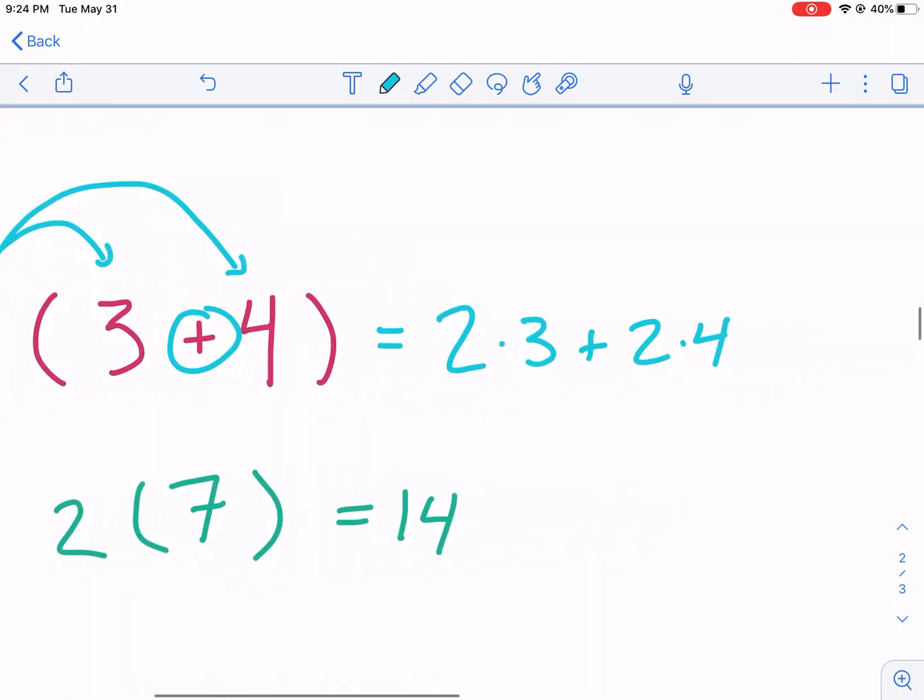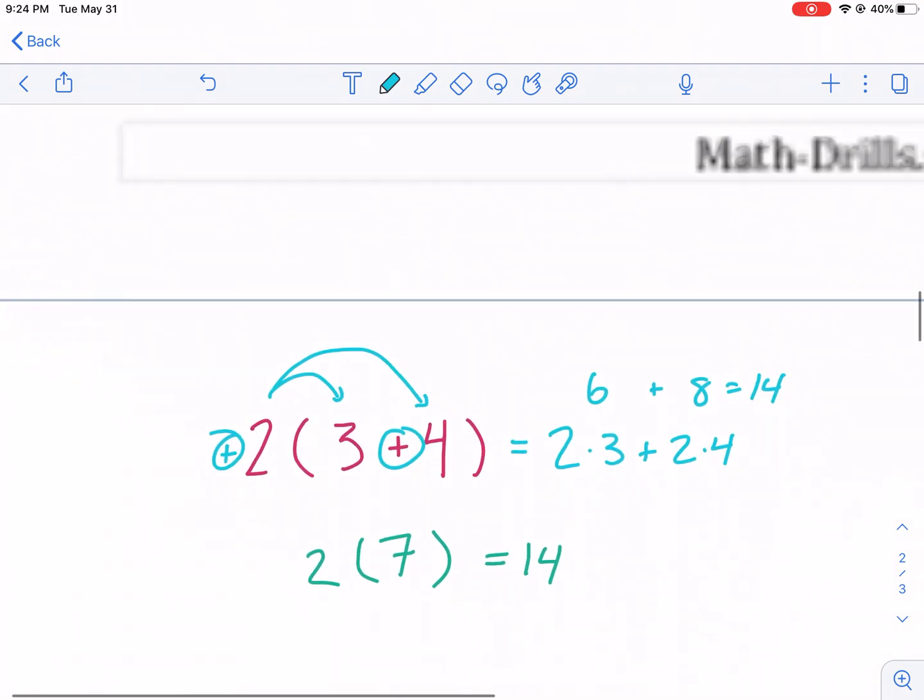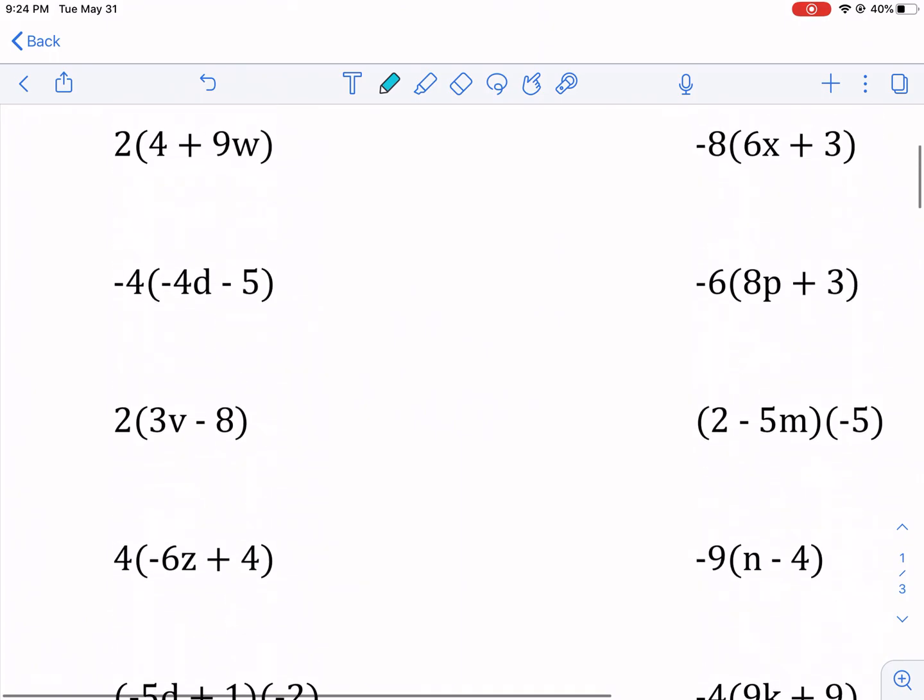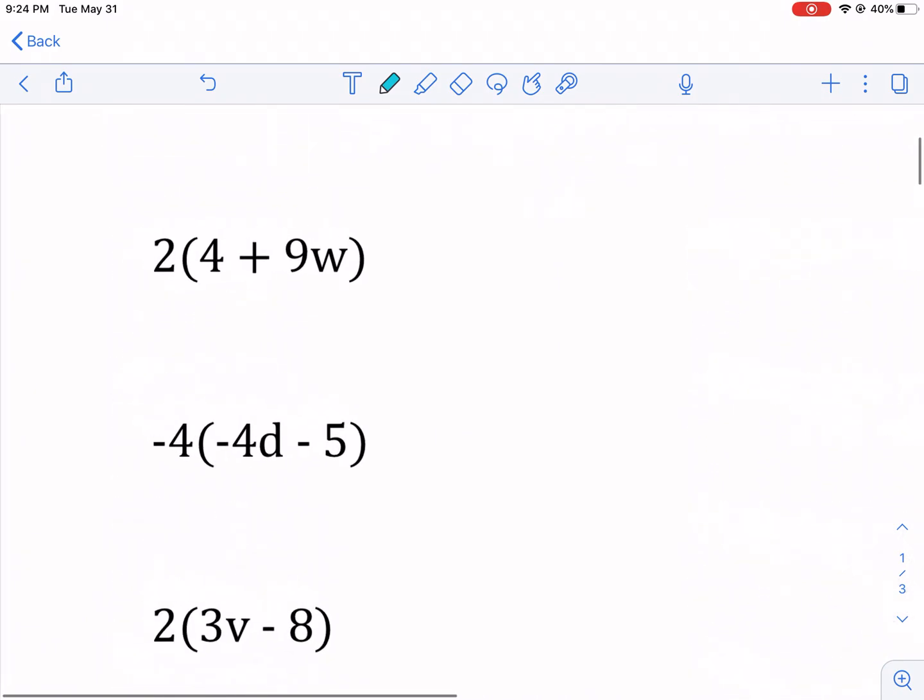There's an implied positive there. So we have 2 times 3, and that's 6, I'm writing it above, plus 2 times 4, that's 8, and that equals 14 also. Now this is useful for when we can't simplify any more inside the parentheses, as is the case with all these examples.